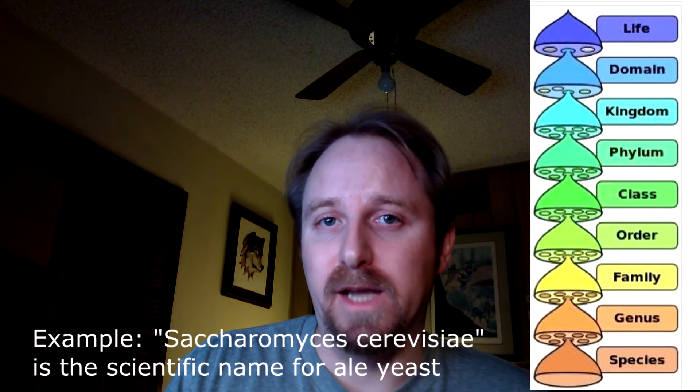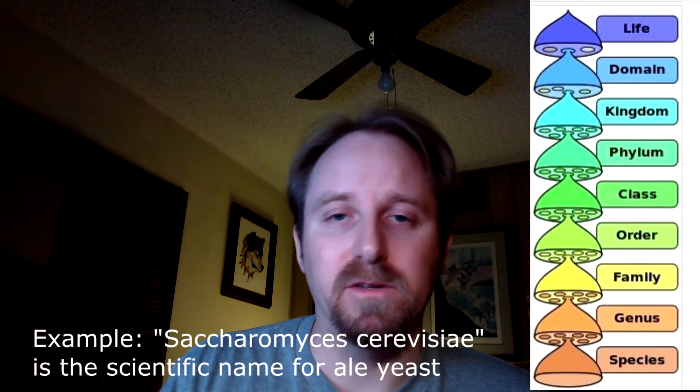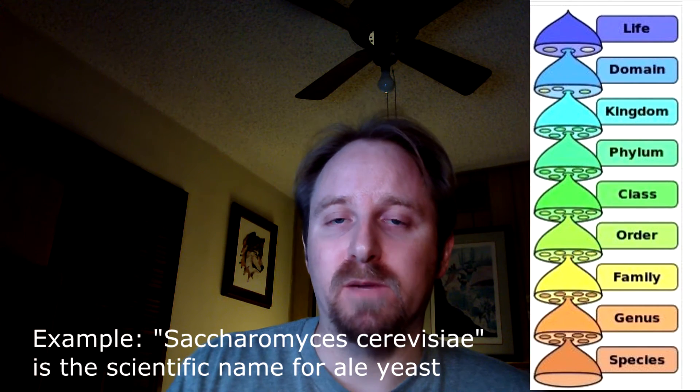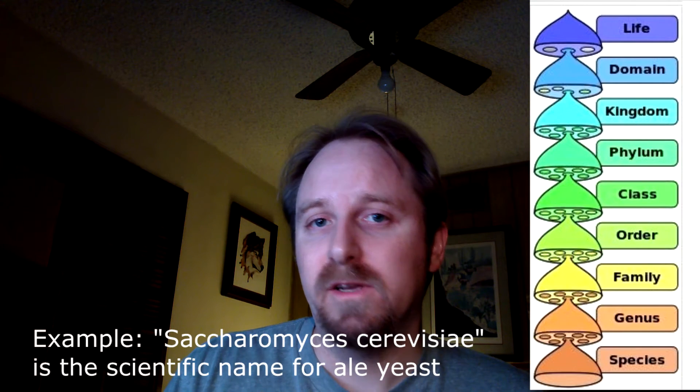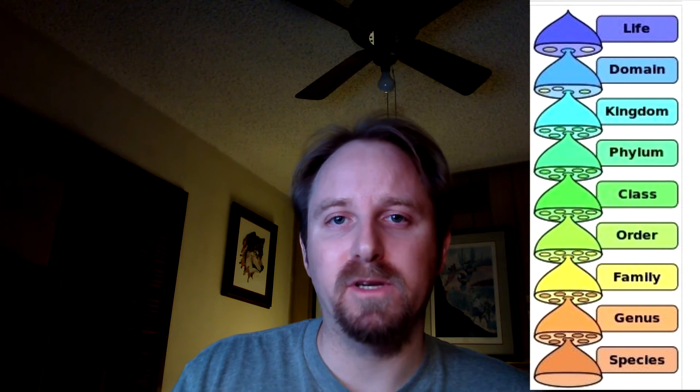A species name comes from the genus and the species. The genus will be capitalized, the species won't be capitalized, and those two names will be the scientific name of a species. The species will also have a common name — for example, Saccharomyces cerevisiae is commonly known as ale yeast. When organisms are separated at a high level of classification, you can say they're very far apart from each other — for example, animals versus plants, or fungus versus bacteria.